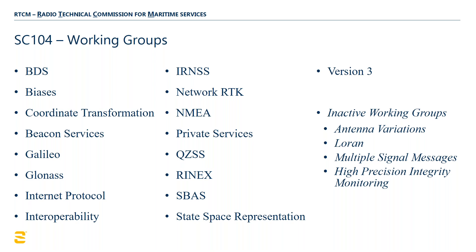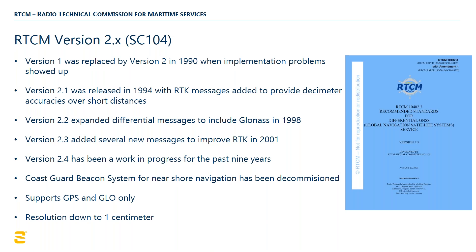Biases is an interesting one. It used to be that we would tell users, if you're working brand A with brand B, turn off GLONASS, because there were GLONASS biases we didn't understand. Jean-Marie Sluwagen from Septentrio and his team discovered the solution, presented it at an ION conference, and that working group was created and we solved the bias problem with GLONASS. Version 2 was the original RTCM standard — I say that tongue in cheek, because version 1 was a disaster. The reason was because there was no interoperability testing, and interoperability was a big key player. Version 2 was the version that started making RTK possible.